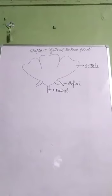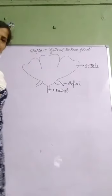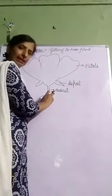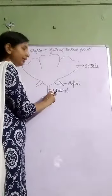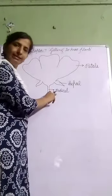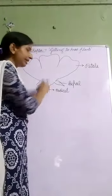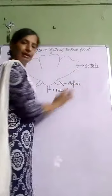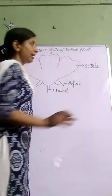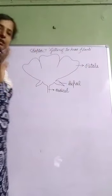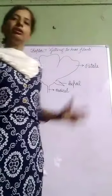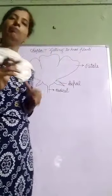So till now we have discussed three important parts of a flower. The stalk of a flower, which joins the flower to the main stem or branch, is called the pedicel. The green leaves of a flower are called sepals. And the colorful leaves of a flower are called petals. Petals are colorful and attractive.